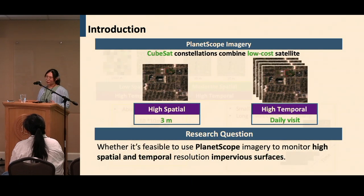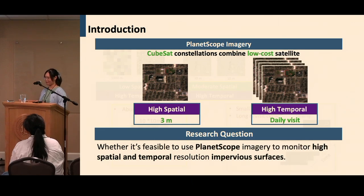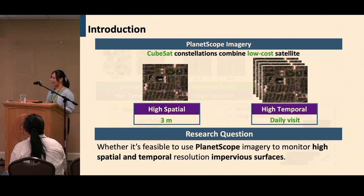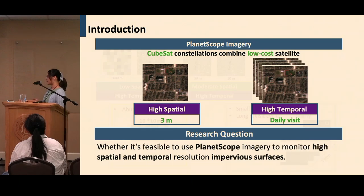As we all know, maintaining both high spatial and high temporal resolution is really difficult and will incur high cost for satellite imagery. However, CubeSat combined with low-cost satellite imagery provides a great opportunity. Planet Company provides three-meter daily-revisit PlanetScope imagery, which hasn't been explored in this field. Our research question is whether it's feasible to use PlanetScope imagery for monitoring at high spatial and high temporal resolution.